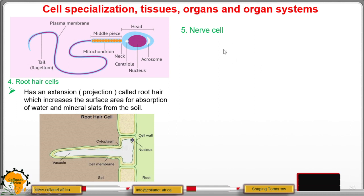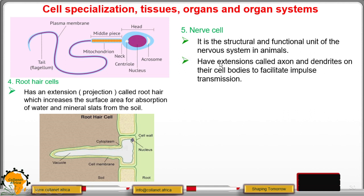Then we have the nerve cell, which is the structural and functional unit of the nervous system in animals and has extensions called axon and dendrites on their cell bodies to allow transmission of impulse. An impulse is an electrical signal or just information.